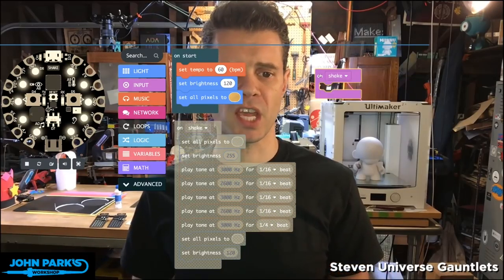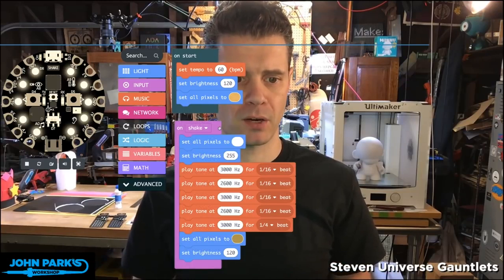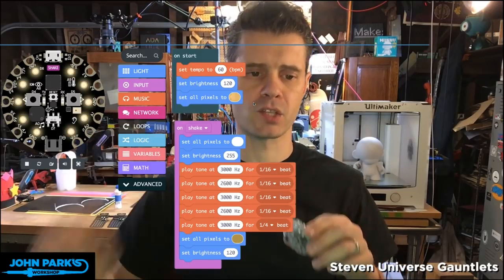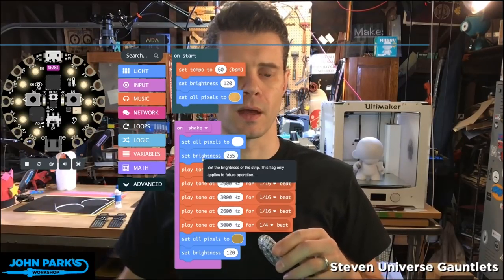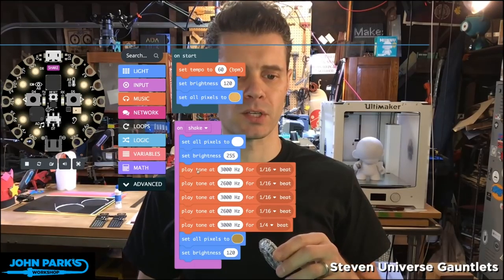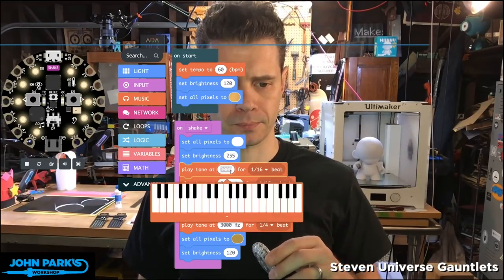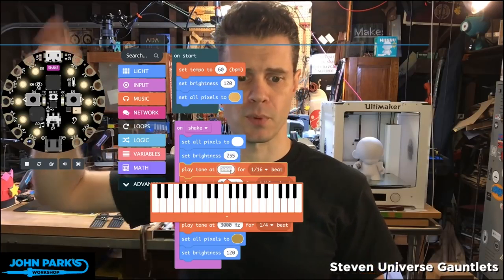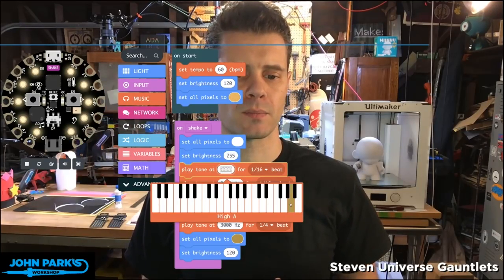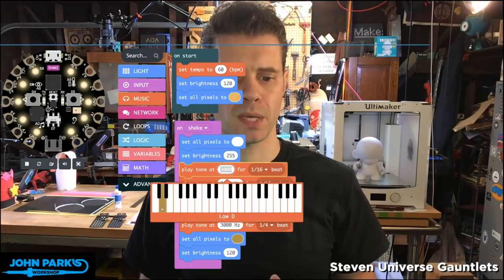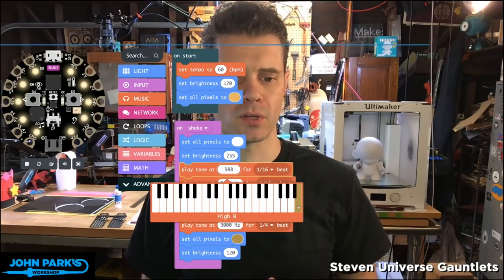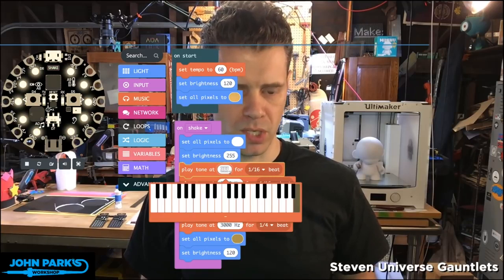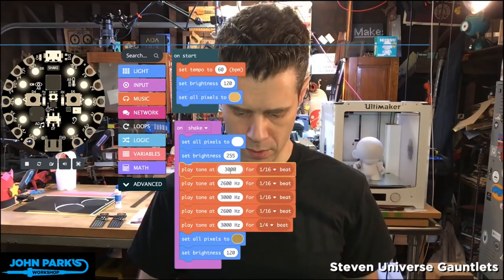So we're going to just get away with using shake in this case. So I've already got a shake block here set up, and then what happens when we shake, I want to set kind of a flash of light. So I'm setting all the pixels to white, and I'm also boosting the brightness up to 255. Then I'm playing this little song. So if you click on the play tone value of hertz, that's the frequency in cycles per second, you can play notes on this little limited input piano keyboard, and you can see the highest note you get is this high B, and it's 988 hertz.